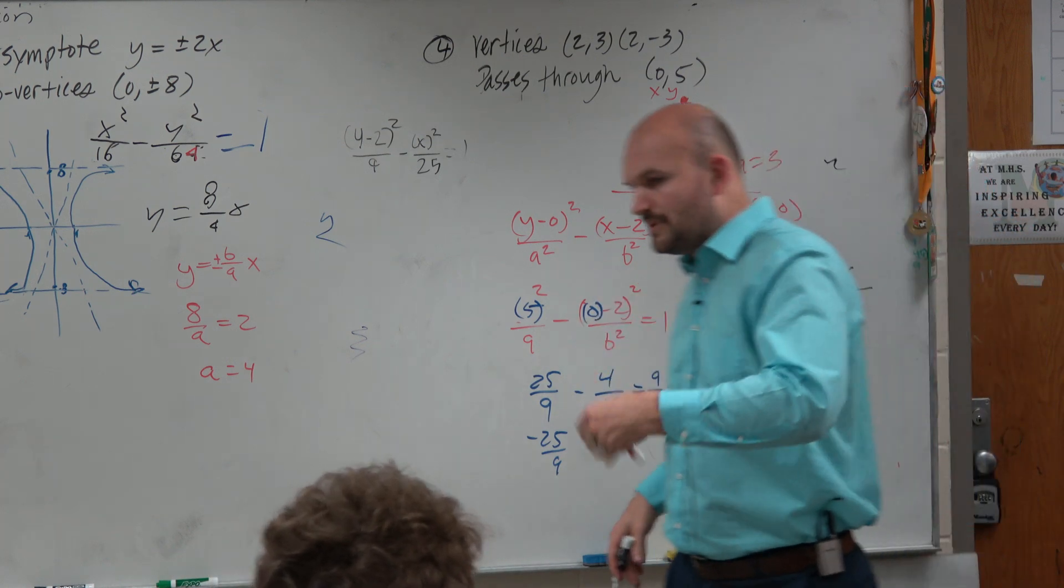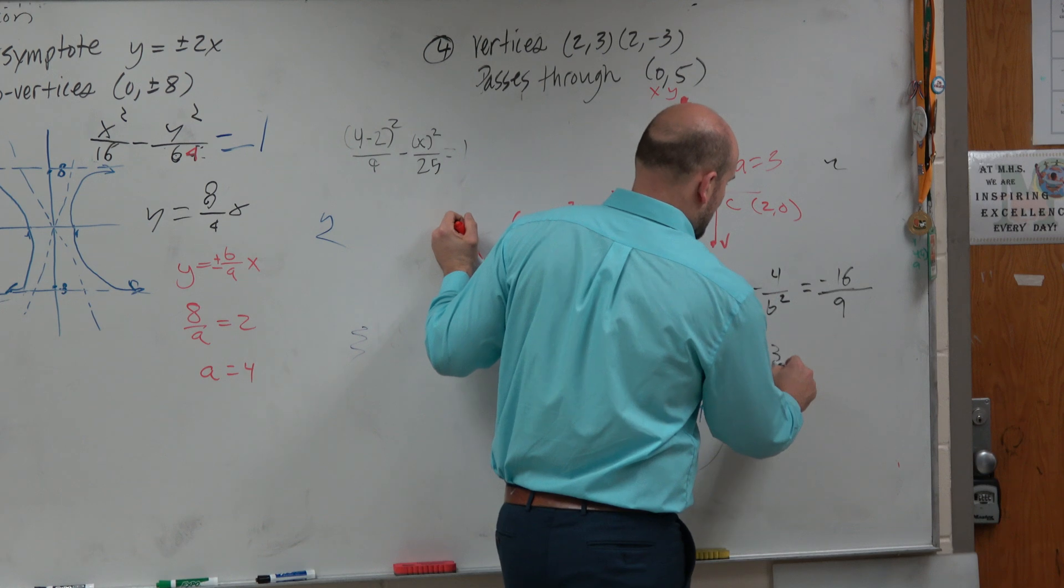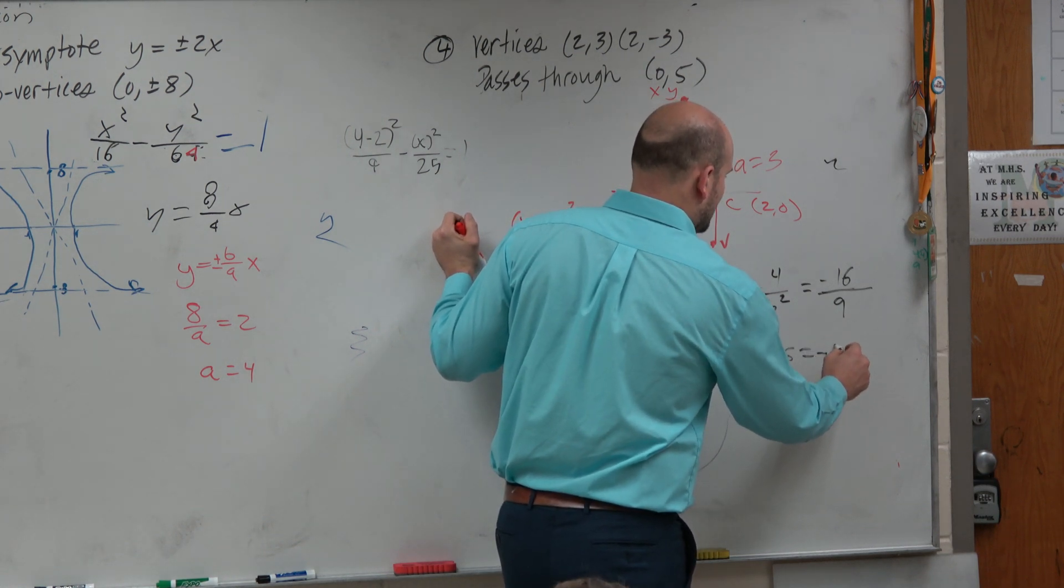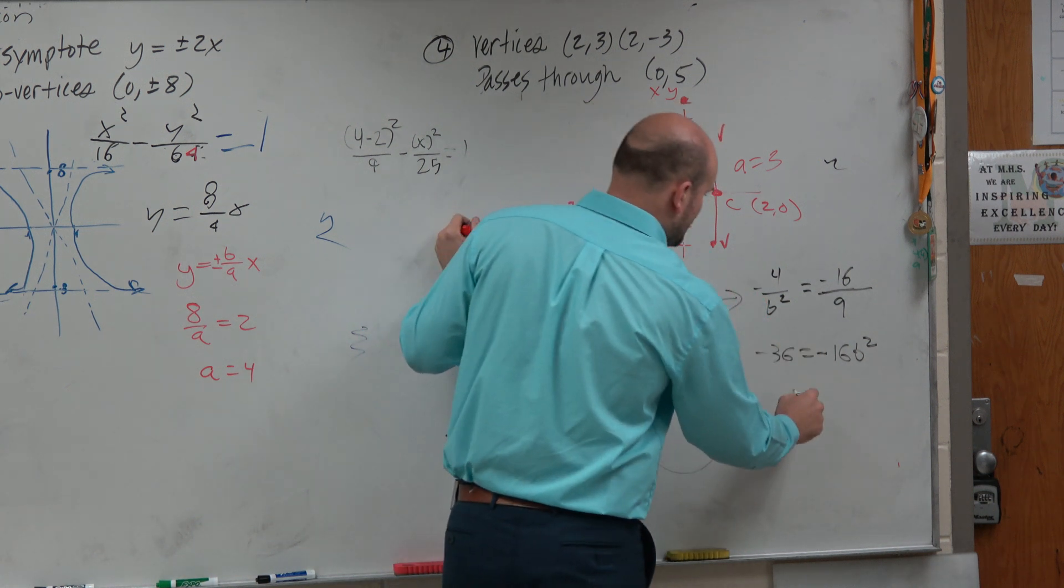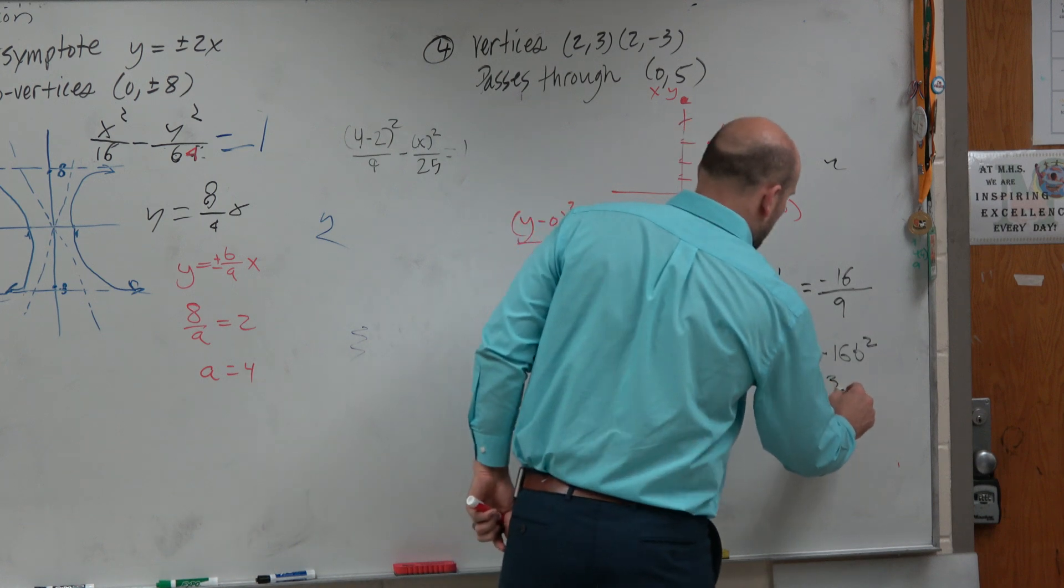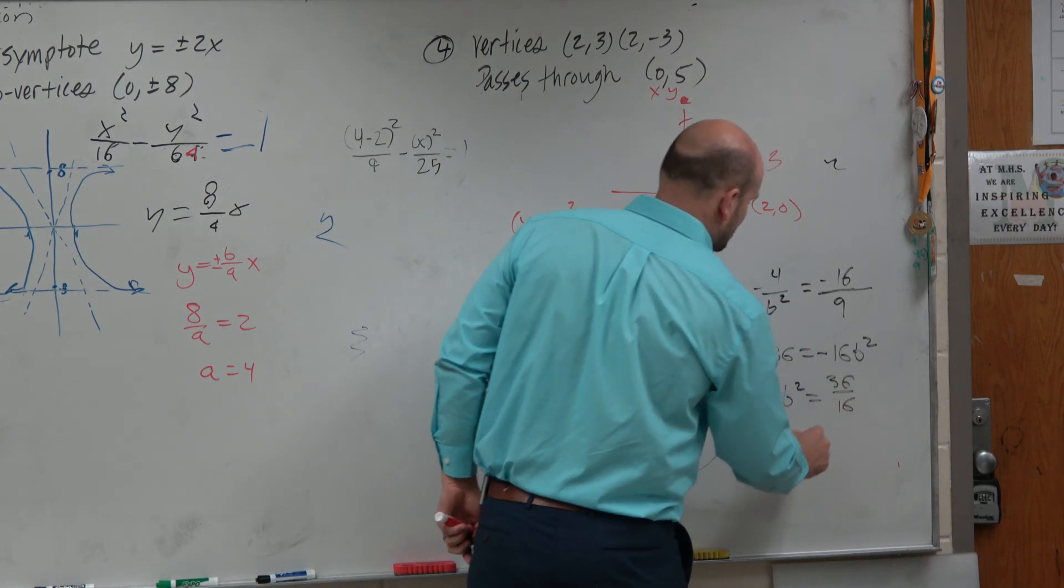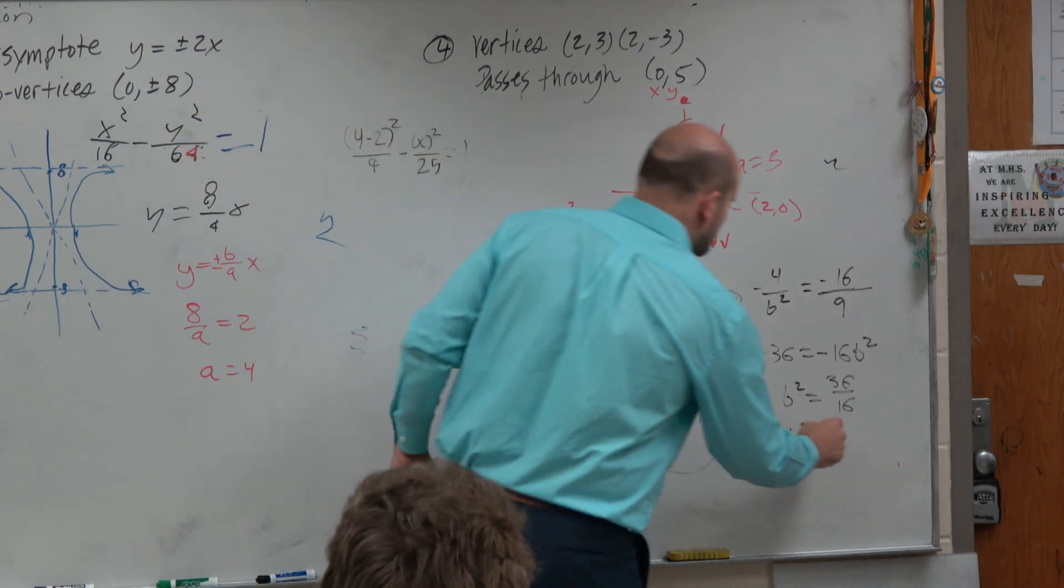Now, you could multiply or think about the cross product. Either way, you're going to get negative 36 equals a negative 16 b squared. And when you solve for b squared, you're going to get a positive 36 over 16, which simplifies down to a, what, 9 fourths.